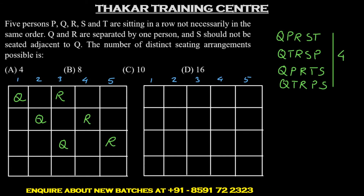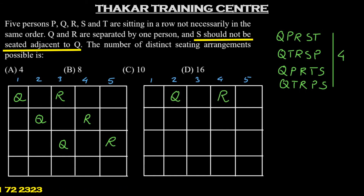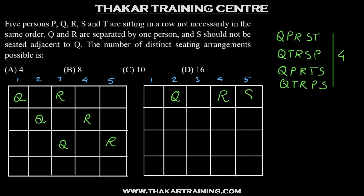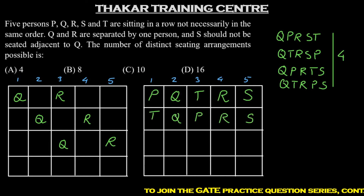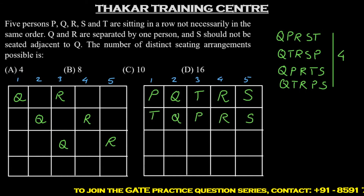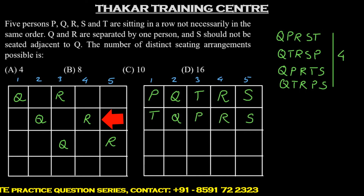Coming to the second set of arrangements, that is Q and R occupying positions 2 and 4. If this is the case, then S cannot occupy positions 1 or 3, so we have only one possible position for S, that is position 5. Then P and T can take up positions 1 and 3 in two ways, giving two possible arrangements.